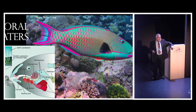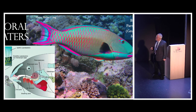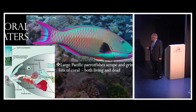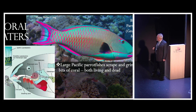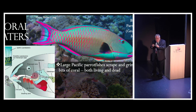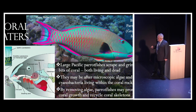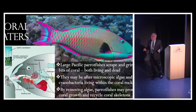Some fishes actually eat coral — particularly parrot fish, which have a very hard beak and nibble away at coral skeletons. They don't seem to be going for the coral polyps; they're going for algae and blue-green algae, cyanobacteria, living within the coral. Large parrot fishes in the Pacific grind up bits of both living and dead coral, removing algae and actually doing the reef some good — promoting coral growth and recycling coral skeletons. They've developed a complicated structure: a beak to bite off bits, and then a second set of jaws and teeth way back in the throat to break up the coral further before swallowing.